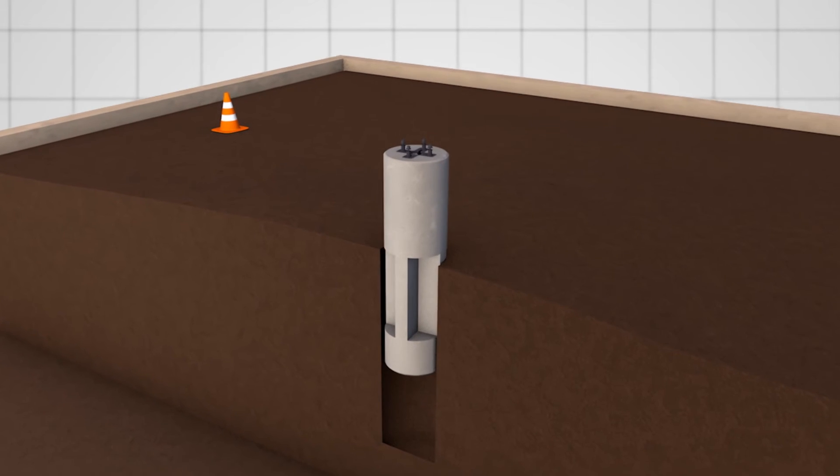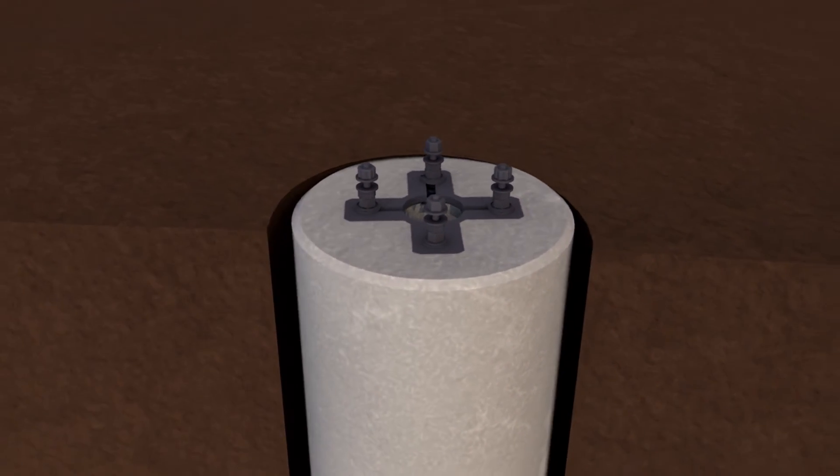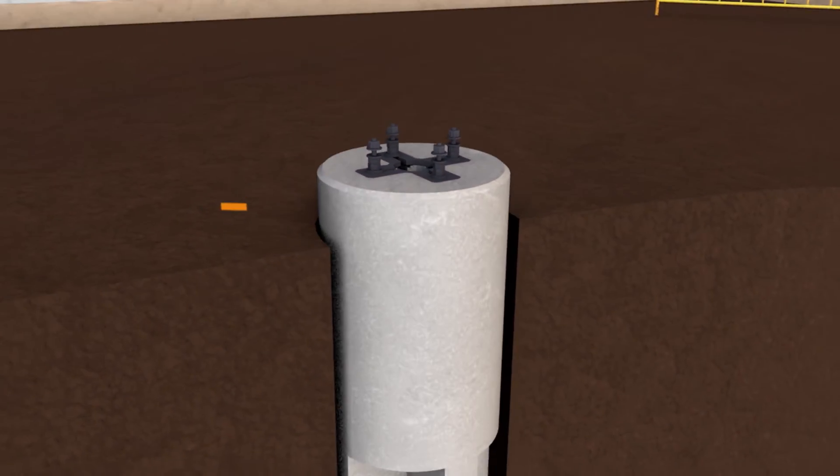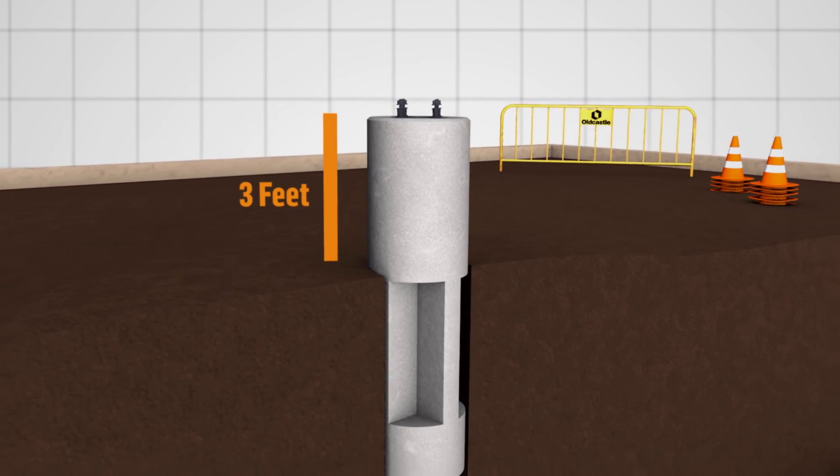Each pole is manufactured in a controlled environment and provided with a clean chamfer finish and smooth cylindrical top. This allows flexibility to install either flush at surface level or up to three feet of exposure.